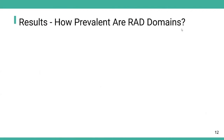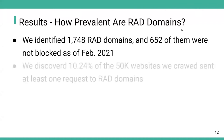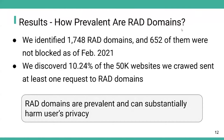In the next part, I will go through our results. To answer how prevalent red domains are: we identified 1,748 red domains, and 652 of them were not blocked as of February 2021, the time we conducted our research. We also discovered that 10.24% of the 50k websites we crawled sent at least one request to red domains. Both results show that red domains are prevalent and can substantially harm users' privacy.